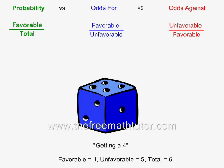In this example, we are rolling a dice once, and we want to know about getting a 4. There is only one way to get a 4 when you roll a dice, so the number of favorable cases is equal to 1. There are 5 sides to the dice that do not have a 4, so the number of unfavorable cases is equal to 5. The total number of sides on the dice is equal to 6.